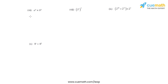In the seventh bit, we use the same law as the sixth bit. The powers are the same but the bases are different, and the two numbers are in multiplication. So we keep the same power but multiply the bases, giving us a times b, which is ab, raised to 4.